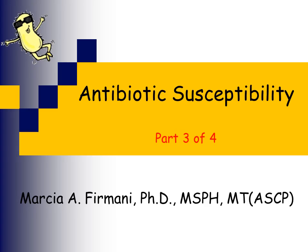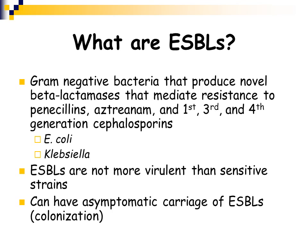This is the third part of our antibiotic susceptibility lecture, and we're now going to talk about another resistant group of organisms: the extended spectrum beta-lactamases. We talked about these when we were talking about the Enterobacteriaceae family. ESBLs are gram-negative bacilli that produce novel beta-lactamases causing resistance to penicillins, aztreonam, and first, third, and fourth generation cephalosporins. The most common ESBL producers are E. coli and Klebsiella, but other Enterobacteriaceae members can also be ESBL producers.